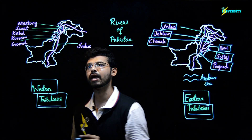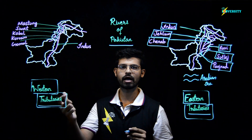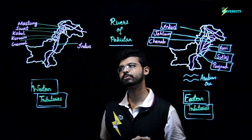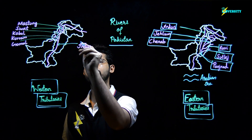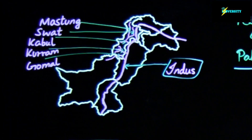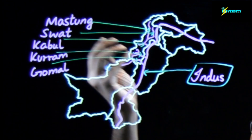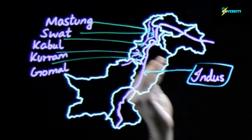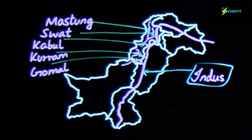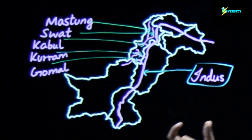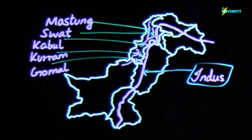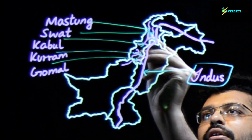Now let us see the western tributaries of River Indus. We have a map here with the rivers labeled. This one is the Indus river, and on the western side we can see some rivers joining River Indus from the west. These rivers are present in the Khyber Pakhtunkhwa province of Pakistan.